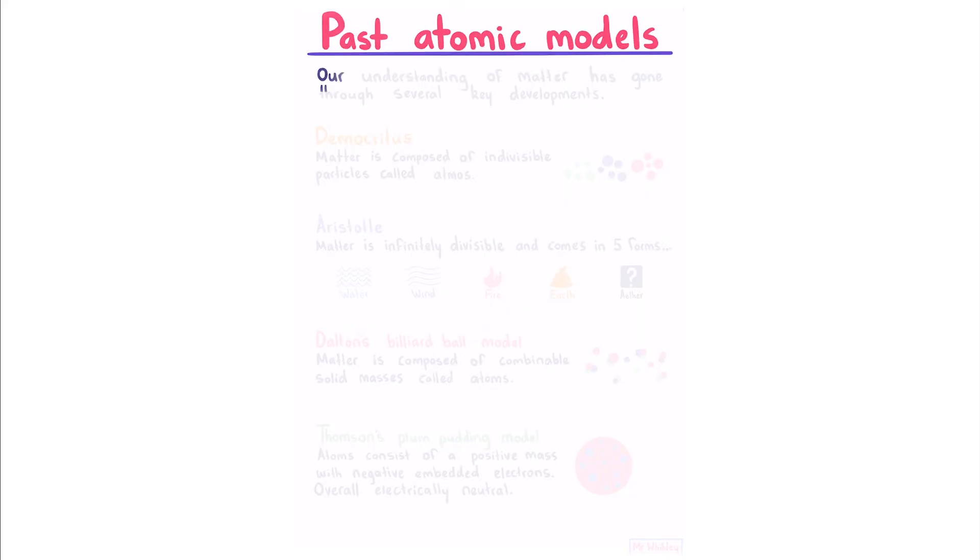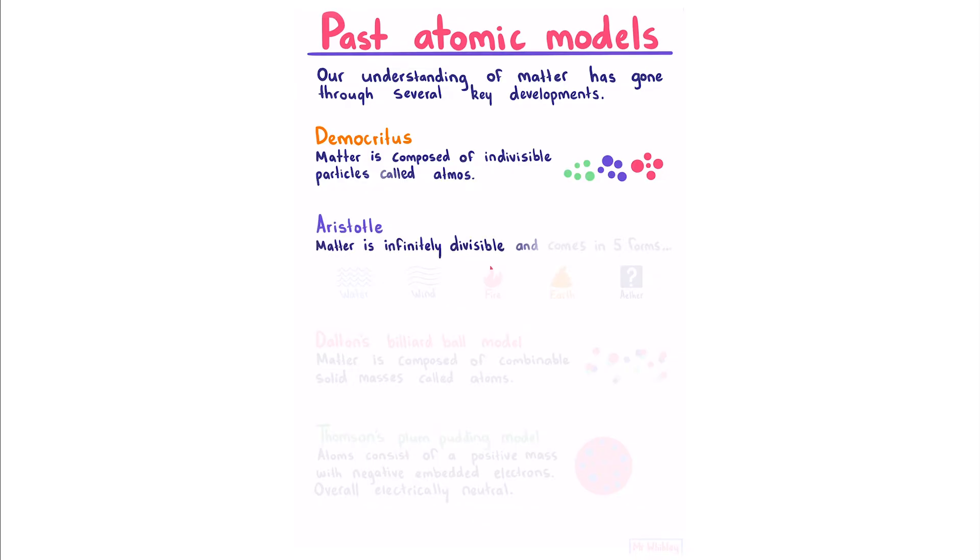Past Atomic Models: Our understanding of matter has gone through several key developments. Democritus said that matter is composed of indivisible particles called atoms. Aristotle said that matter is infinitely divisible and comes in five forms: water, wind, fire, earth, and ether.